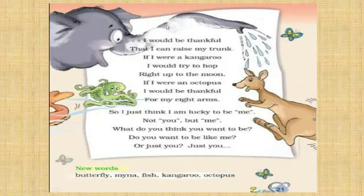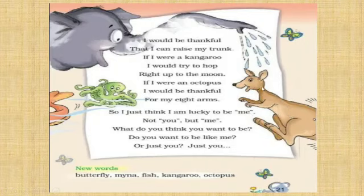The elephant uses its trunk to pour water over itself. Yeh girl aisa sochti hai ki agar main elephant hoti toh is trunk ko raise kar sakti hoon, apne aap par paani dalti elephant jaisi. Then which animal is this? This one is a kangaroo. Kangaroo kya karta hai? Hop karta hai. So this girl thinks: if I were a kangaroo, I would try to hop right up to the moon.